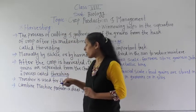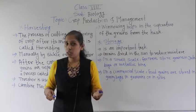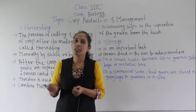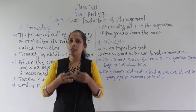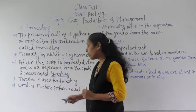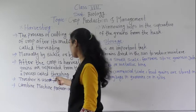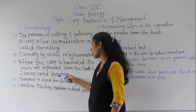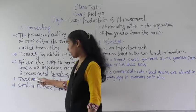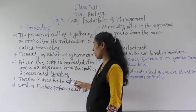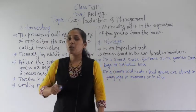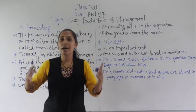Threshing can also be done manually by striking the bunch of crops on the ground, which removes the grains from the chaff. It can also be done using a machine called a thresher. If the crop quantity is small, manual threshing works, but on a large scale, the thresher machine is used.